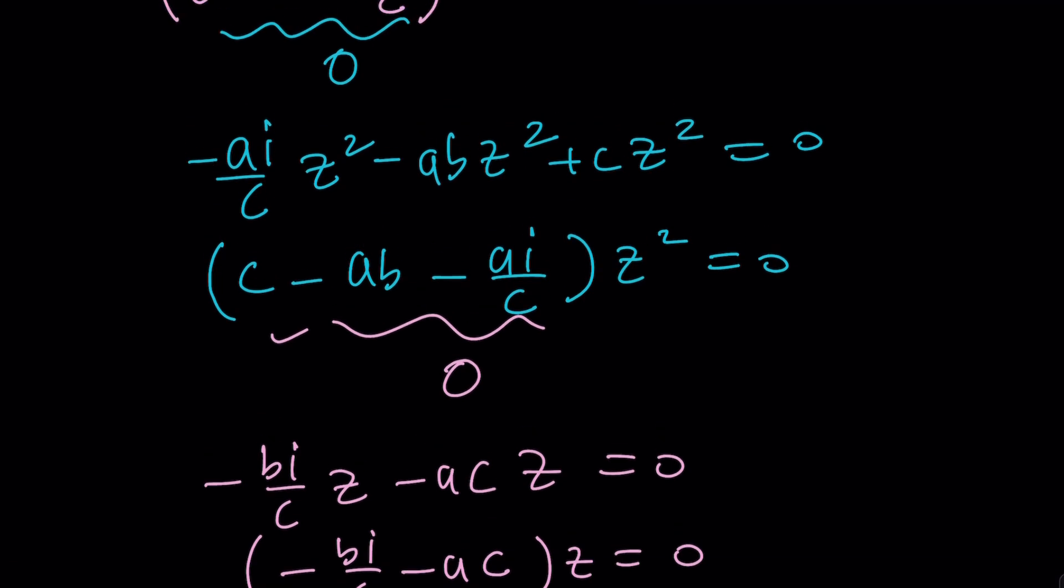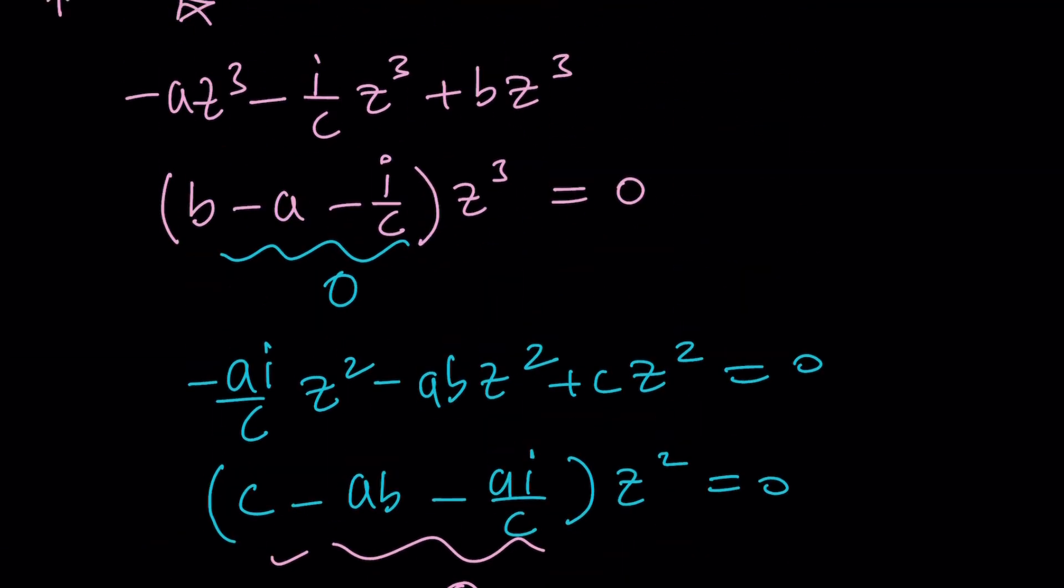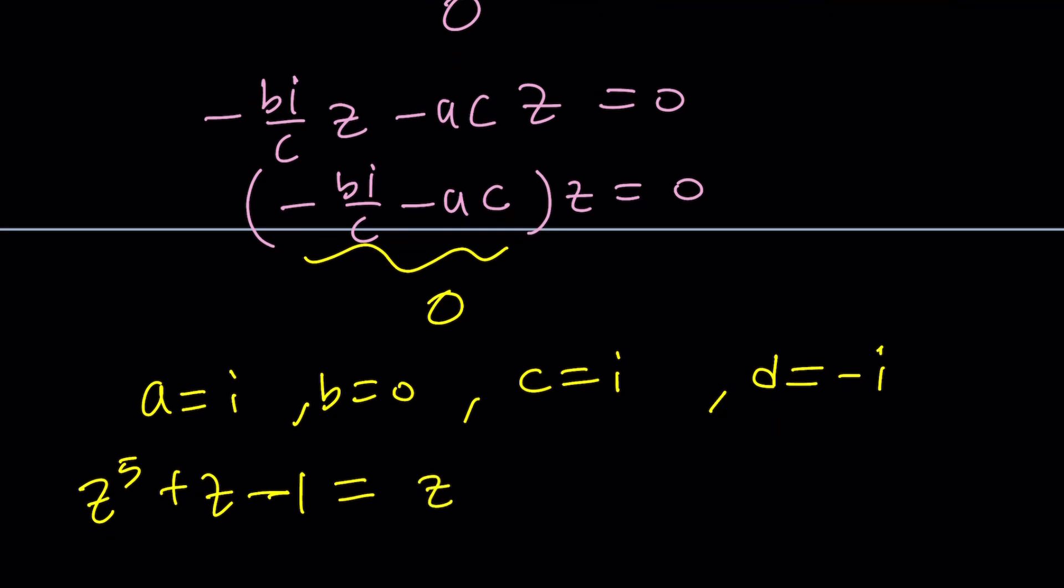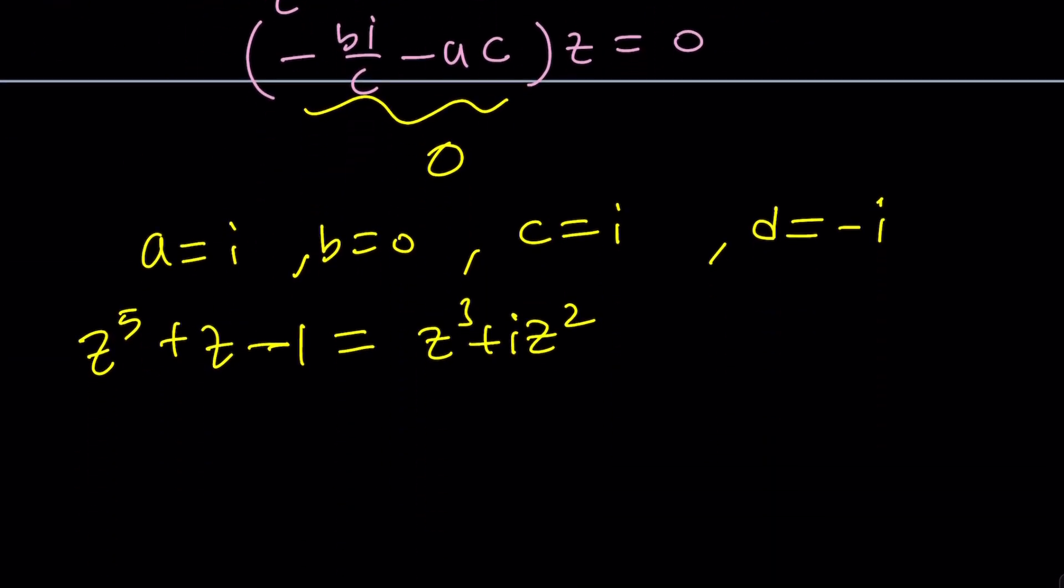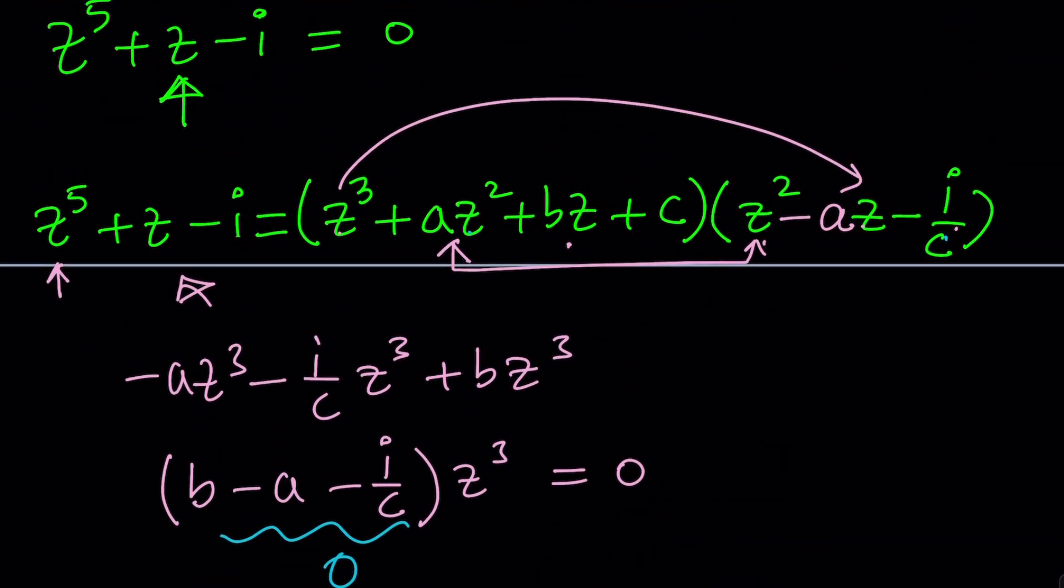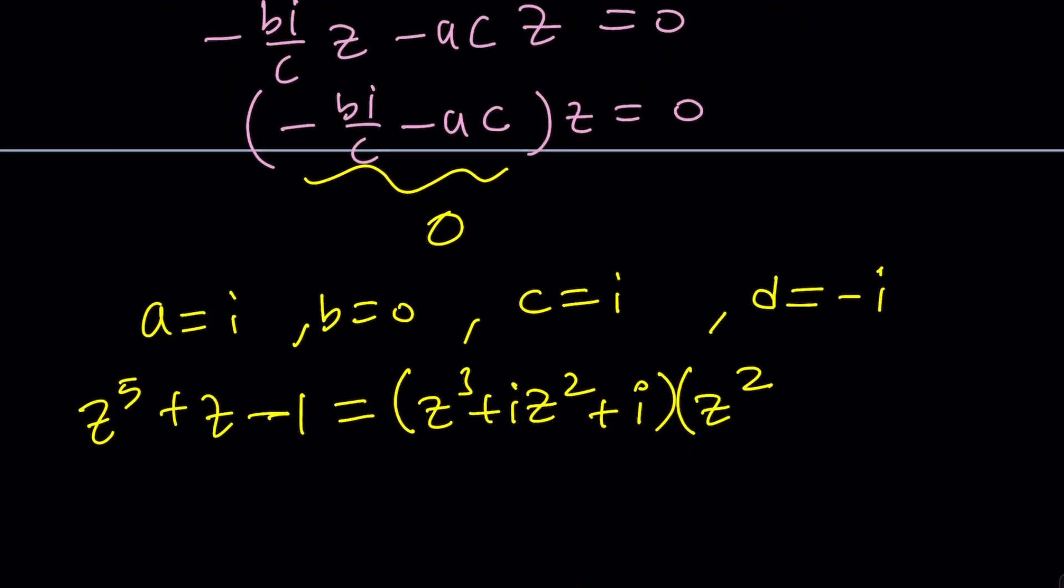I'm also going to be looking at results from Wolfram Alpha. But z to the fifth plus z minus i can be factored into z cubed plus Az squared, z cubed plus i z squared, plus C. By the way, B is zero, so we're just going to write i for C, which is our constant. And the other factor, you can kind of guess what the other factor is going to be like at this point. That's definitely going to have a z squared. And then I do have A, which is one, actually. A is i.